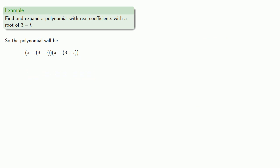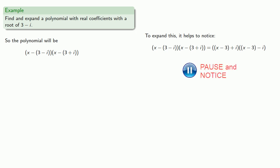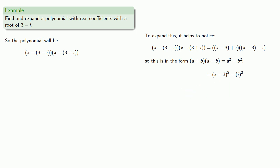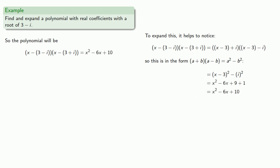And so x minus (3 plus i) is another factor. Let's expand this out and verify we actually get a polynomial with real coefficients. It helps to notice that the form of our roots allows us to rewrite the two factors, so our product is of the form (a plus b)(a minus b), which equals a squared minus b squared. When we expand, we get (x minus 3) squared minus i squared, and we can expand and simplify. As requested, we have a polynomial with real coefficients.